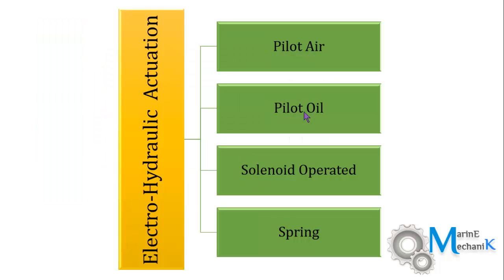Electro hydraulic actuation is a very modern and recent usage — it is a combination of compressed air or control air, pilot oil or hydraulic oil under pressure, and solenoid operation with a spring. All these things combined together form the electro hydraulic actuation.